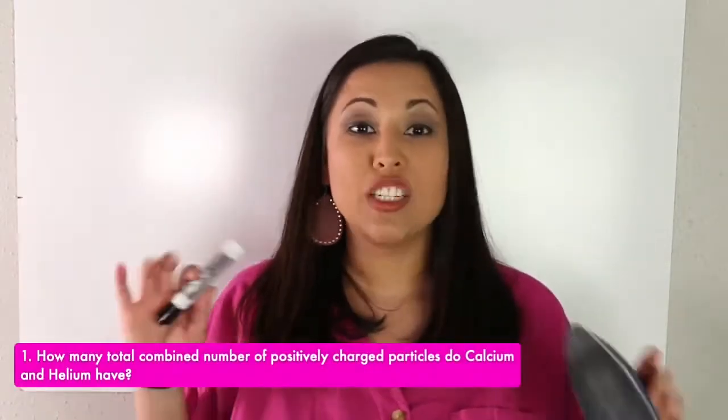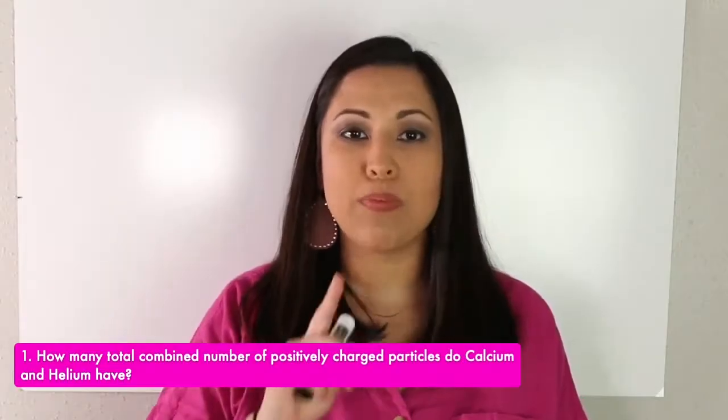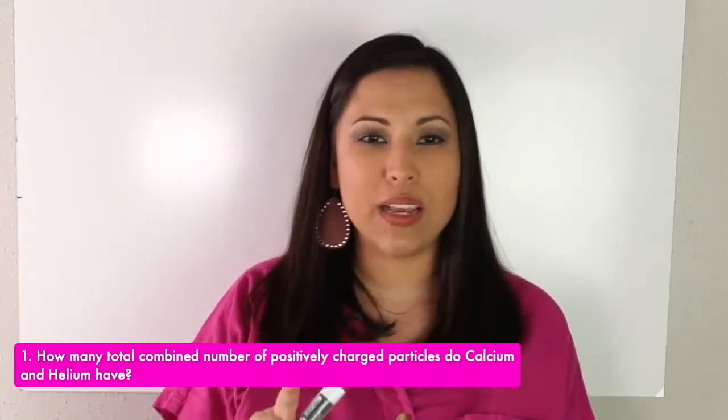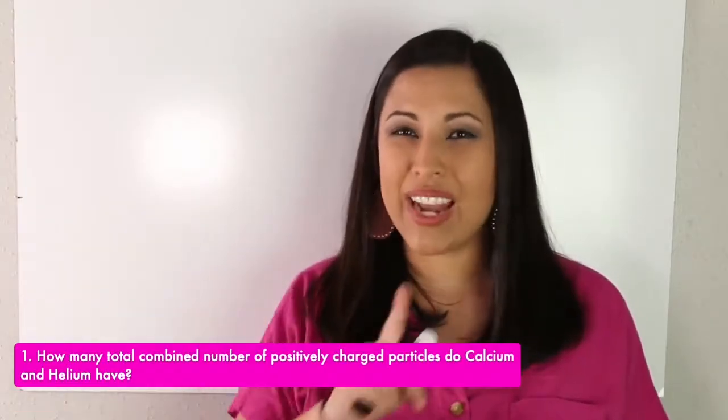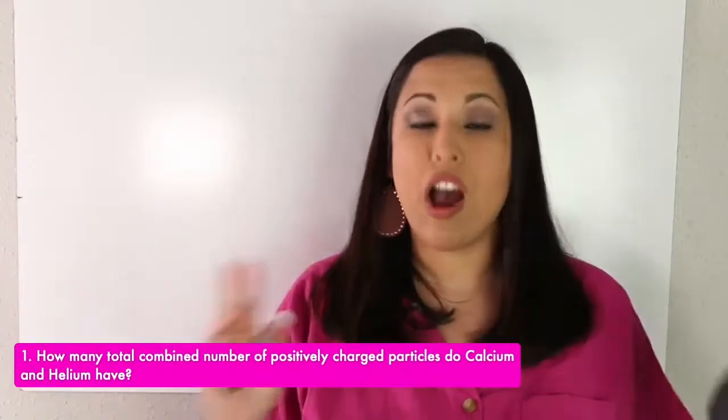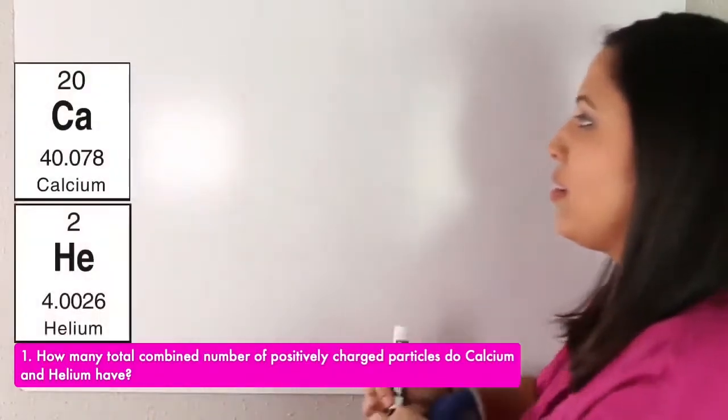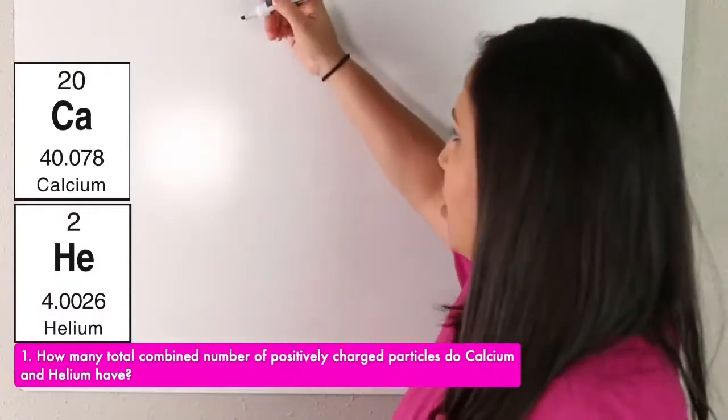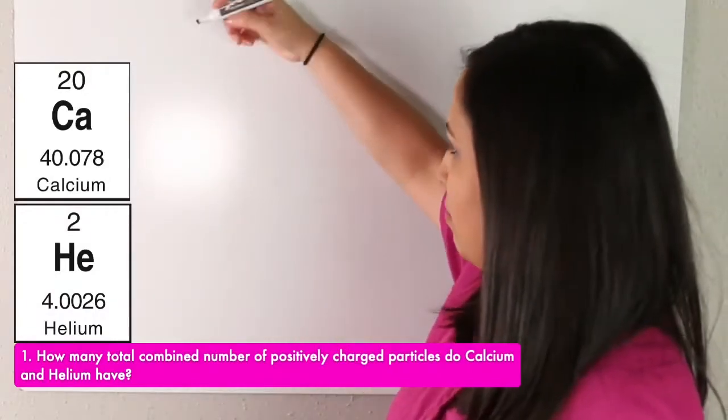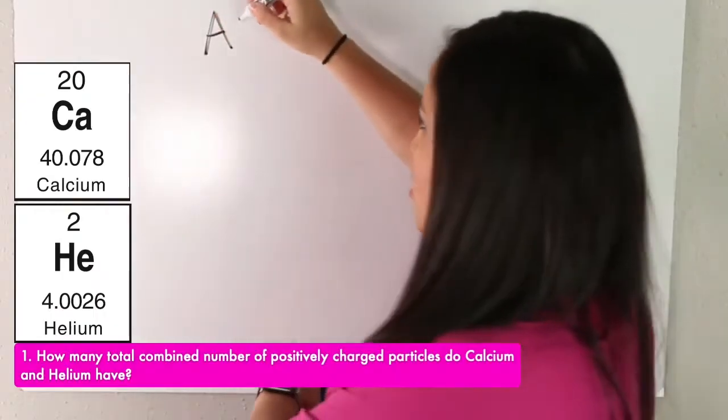How many total combined number of positively charged particles do calcium and helium have? So first, we'll need to find calcium and helium on the periodic table. After we do that, we'll be able to see their atomic number in mass. So for calcium, our atomic number is 20.